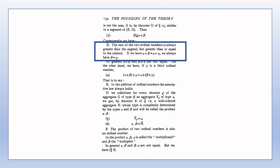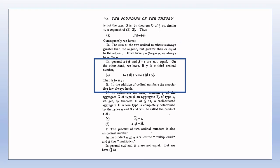Theorem D is self-explanatory and is explained by the comments on the previous few lines in the book. Theorem E shows that addition of ordinal numbers is associative, but follows anyway from the results of Section 8 on more general ordinal types. We can be confident that both (α + β) + γ and α + (β + γ) both represent ordinal numbers by Theorem C from this section.